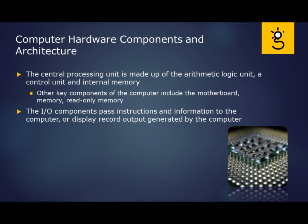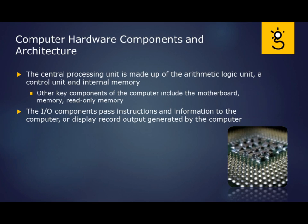Other components in the computer include the motherboard or system board, memory such as RAM — read-only or random access memory — and read-only memory, among many other components. It might have permanent storage, whether a spinning disk or a solid state drive. You also have your I/O, your input-output components, which pass instructions and information into the computer, or display and record output generated by the computer.